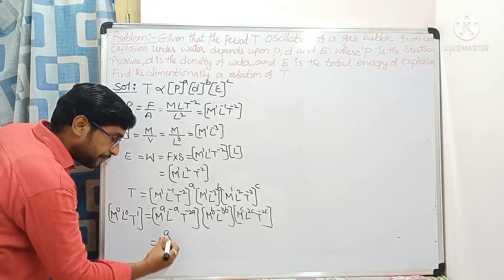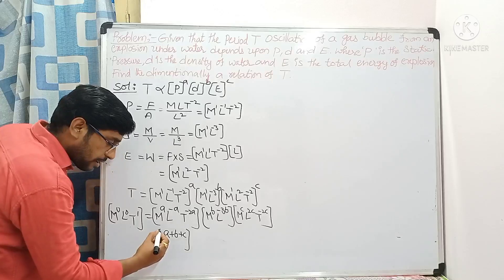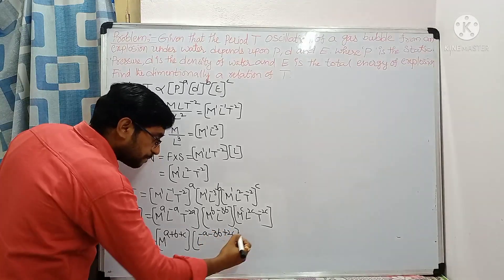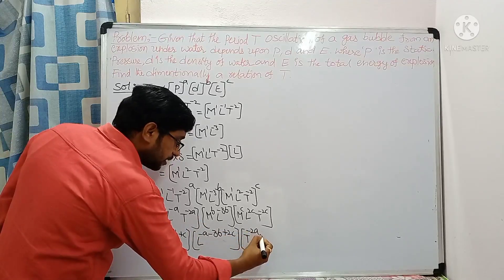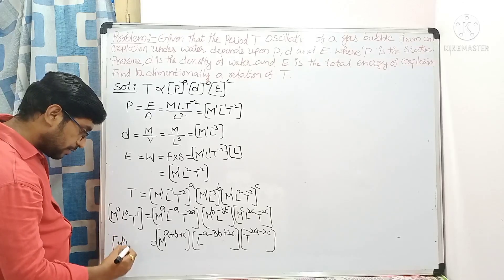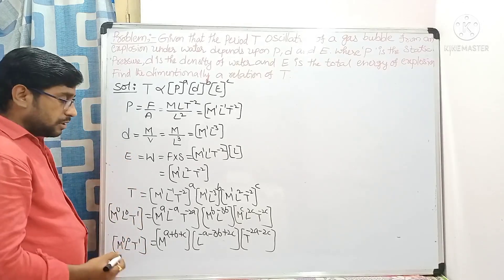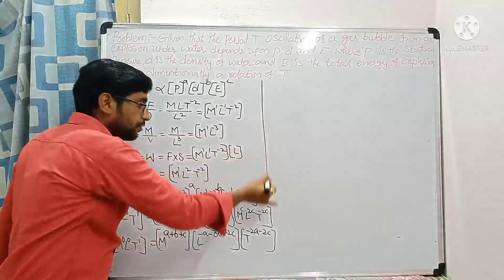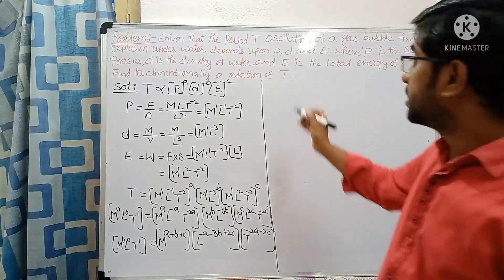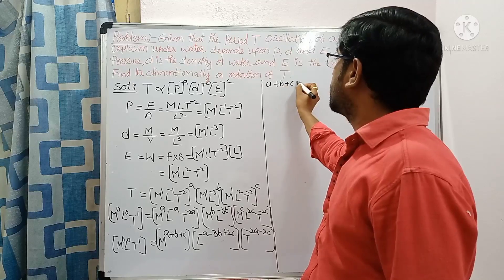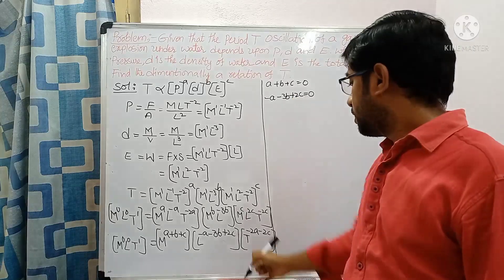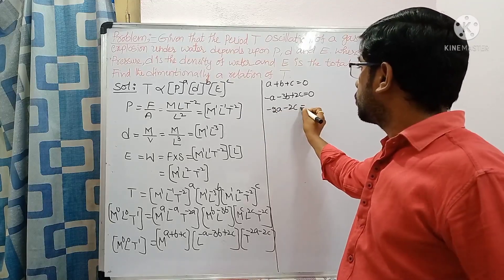Continuing: M to the power c, L to the power 2c, T to the power minus 2c from energy. Adding powers with the same base: M to the power (a plus b plus c); L to the power (minus a minus 3b plus 2c); T to the power (minus 2a minus 2c). Equating LHS and RHS gives three equations: a plus b plus c equals 0; minus a minus 3b plus 2c equals 0; minus 2a minus 2c equals 1.